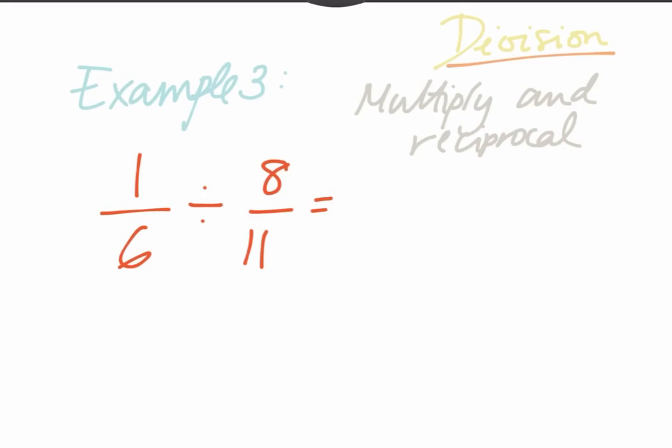Now when we come to divisions with fractions, there are two methods. The first one is the multiplication and reciprocal method. What you have to do is change the division sign into multiplication, and the second fraction gets inverted. So you copy down the first fraction, then change the division sign to multiplication.